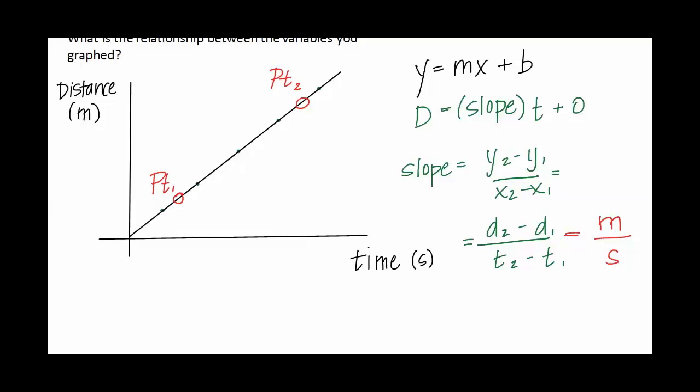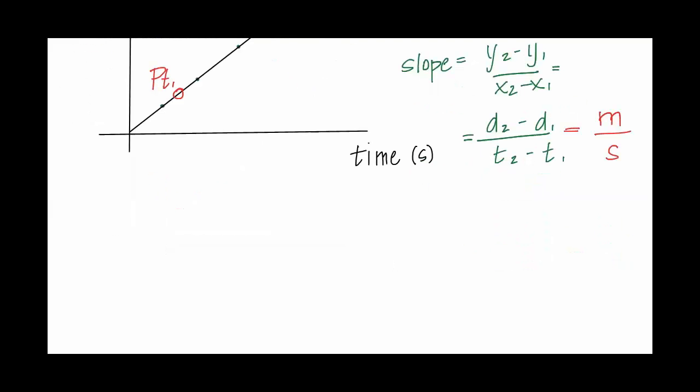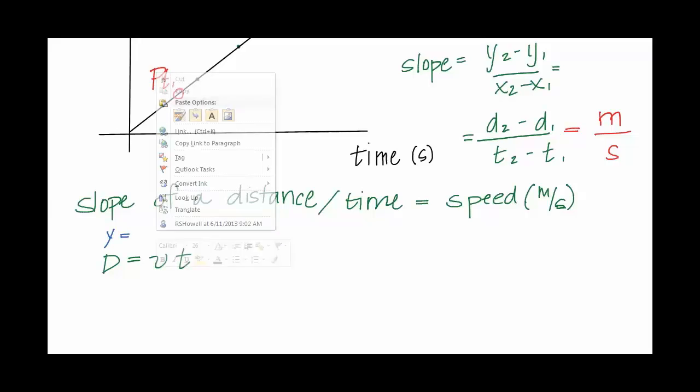And officially that is referred to as the speed. So the slope of a distance time graph is speed. Now the symbol we use for speed is a soft looking V. So if I rewrite the equation I will have distance equals V representing speed times t. And this is just the equation of the line y equals mx.